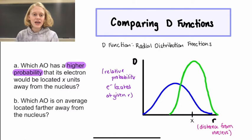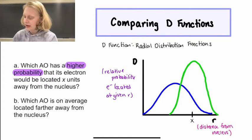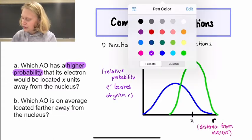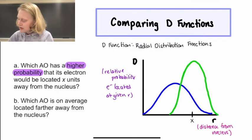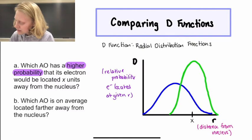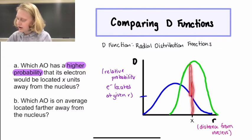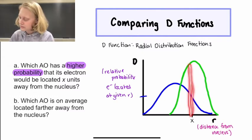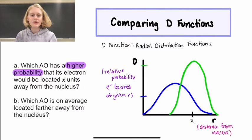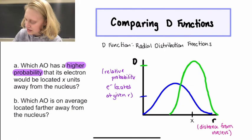So since we're going to be comparing probabilities, we need to compare values along the vertical axis. Okay, so the blue function at radius x has a value right here, and the green function at radius x has a value up here. So if we're comparing these two values vertically, we can see that the green one has a higher relative probability.